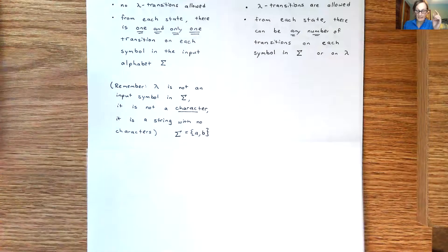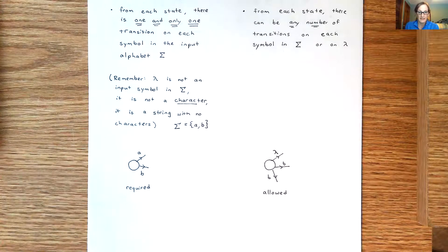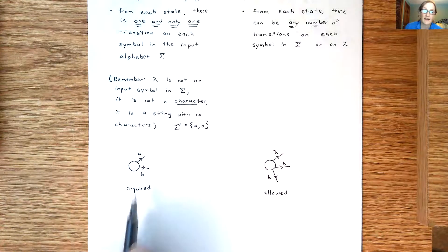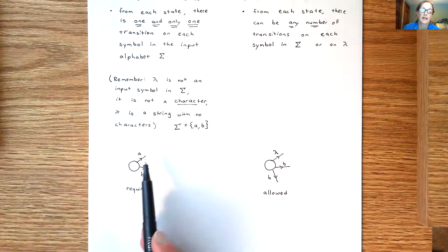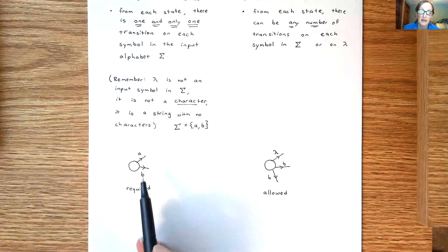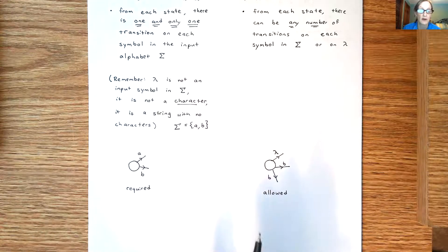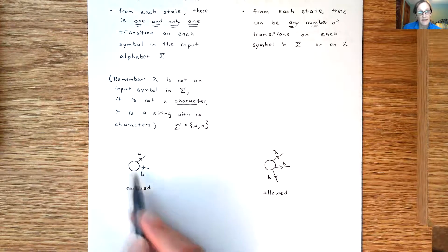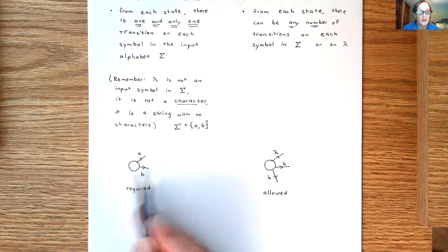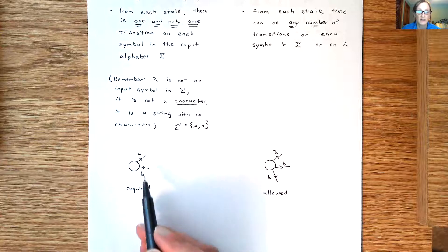So here's the way I like to think of it visually: for a DFA every single state you have to have one transition on an A and one transition on a B, this is assuming an input alphabet is A, B. So if you look at every single state there has to be one transition on an A and one transition on a B, no more, no less.